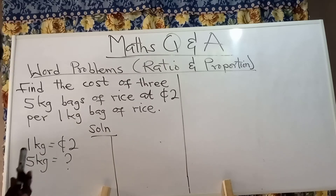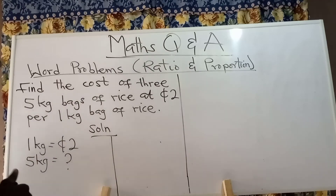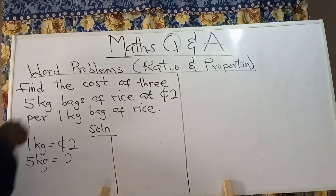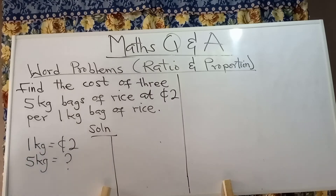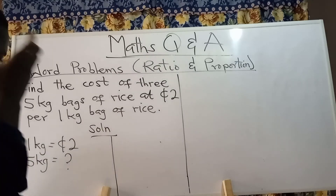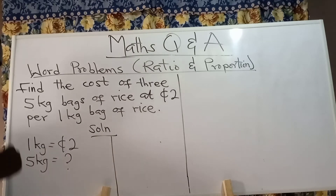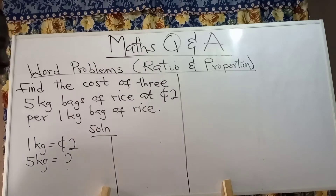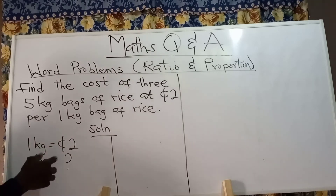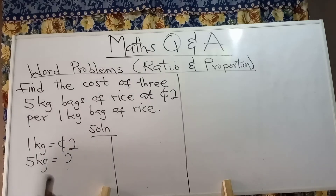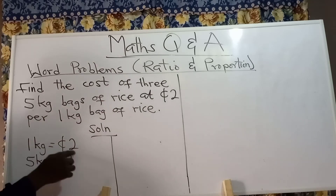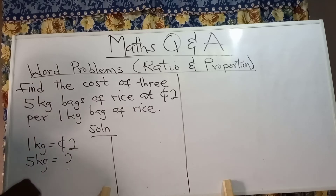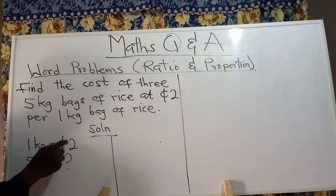To figure out whether it is direct or indirect proportion, you have to think: should the result be more or less than the given first result? By sense, if one kg costs two cities, five kg should cost more. So it is a direct proportion question. If after solving it the result should be lesser than two cities, then it is indirect. This one is direct because an increase in quantity causes an increase in cost — one kg increased to five kg, so the cost should also be more.